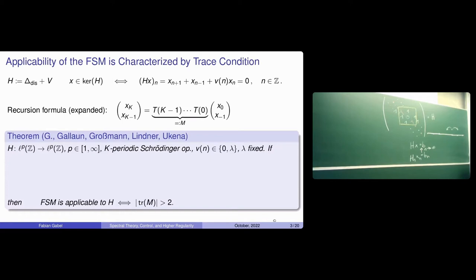We want to characterize the applicability of this operator by a so-called trace condition. We start out with the recursion of this operator and use the fact that we can use this tridiagonal structure to formulate a recursion. The recursion formula can also be described via matrix multiplication. We have a periodic potential, and for every natural number we can think of periodically continuing. Each entry of the sequence is given by a so-called transfer matrix that we denote with T.